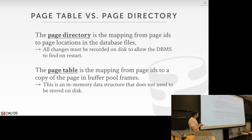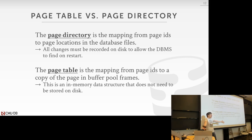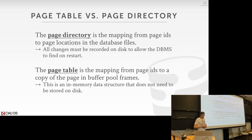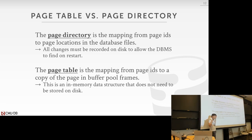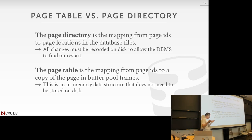Another distinction: page directory versus page table. The page directory is used to find where pages live in our file — it tells us what file and offset to look at, and changes to it must be durable, written back to disk. The page table is an internal in-memory map from page IDs to frame locations in the buffer pool — it's entirely ephemeral; if we crash and restart, the buffer pool is blown away anyway. So we can use whatever hash map implementation we want. For Project 1, std::map is fine — it doesn't need to be durable, just thread-safe.